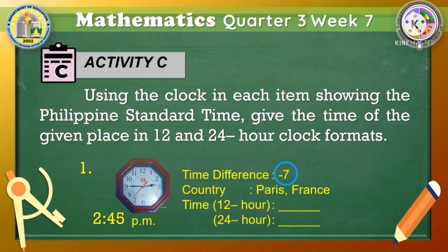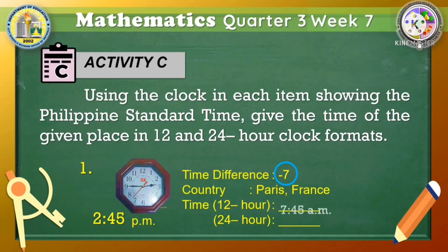The first thing that you should do is convert 2:45 PM to 24-hour clock format. In doing that, just add 12 hours, so it becomes 14:45 hours. You may now subtract 7 from 14:45 hours, and the answer is 7:45 AM — that is in 12-hour clock format — while it's 07:45 hours in 24-hour clock format.